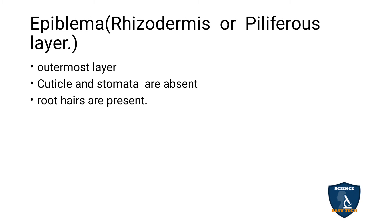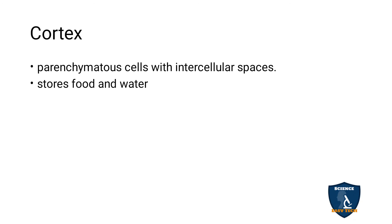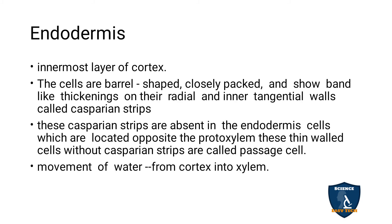Reading from the diagram: The first portion is epiblema, also known as rhizodermis or piliferous layer — the outermost layer; cuticle and stomata are absent; root hairs are present; it gives protection to inner tissues. Cortex: parenchyma cells with intercellular spaces; stores food and water. Endodermis: innermost layer of the cortex; barrel-shaped, closely packed; tangential and radial walls thickened with suberin — called Casparian strips, founded by Caspari. Opposite to the protoxylem, cells are thin-walled without Casparian strips — called passage cells; their function is movement of water from cortex into xylem.